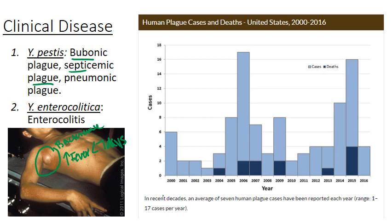In septic plague, the patient is going to die — 75% of patients die from this. Bacteremia develops rapidly, so unless you get treated almost before any of these symptoms — you need to get treated before these seven days. Prognosis is not good.